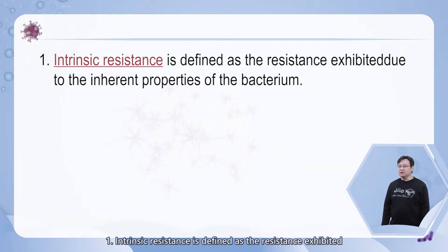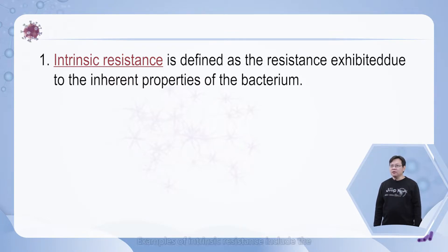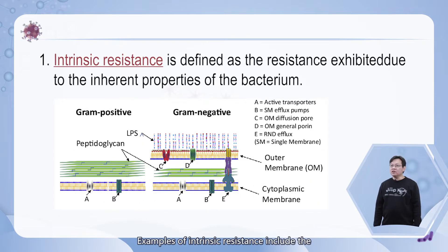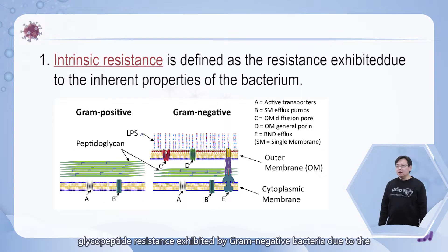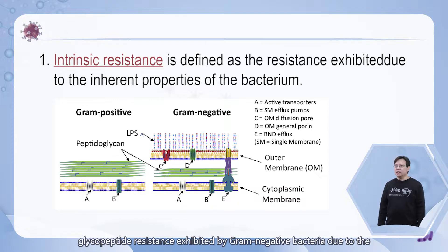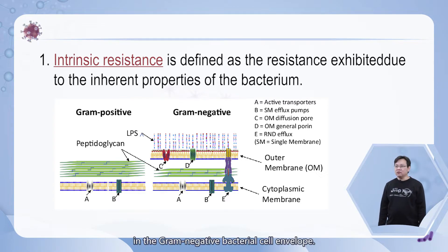Intrinsic resistance is defined as the resistance inhibited due to the inherent properties of the bacterium. Examples of intrinsic resistance include the glycopeptide transistors, inhibited by gram-negative bacteria due to the improbability of the outer membrane present in gram-negative bacteria cell envelope.